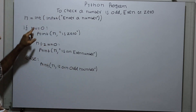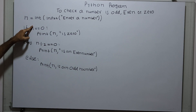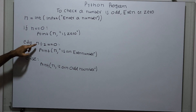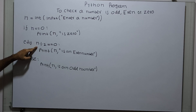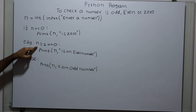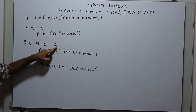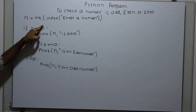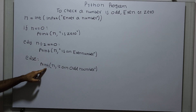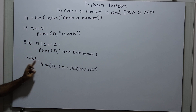Print n is an odd number. Why is n an odd number? n is not 0, and n is not an even number — that means when we divide n by 2, the remainder is not 0. That is, n is not even and n is not 0, so n is an odd number.